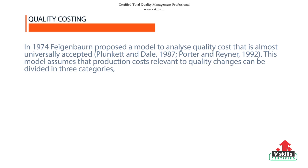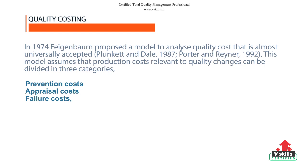Feigenbaum proposed a model to analyze quality costs where the model assumes that the production costs relevant to quality are divided in two. First is prevention cost: the cost of any action taken to investigate, prevent, or reduce defects and failures. Second is the appraisal cost: the cost of assessing and recording the quality achieved. Third is the failure cost: the cost arising from failure to achieve the quality specified. These can be divided into internal and external costs, where they are produced within the plant or after the transfer of ownership to the customer.